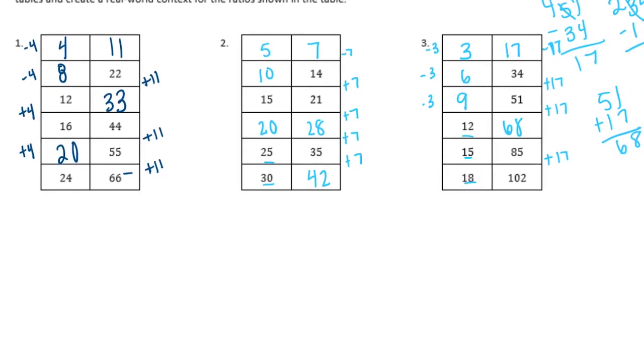Okay, so there we have our tables. Now we need to choose one and create a real-world context for the ratios shown in the table. So I'm just going to pick, let's just pick the first one. I'll do blue so it matches that one. So let's say, let's do something with food, maybe.